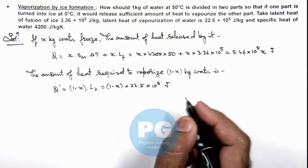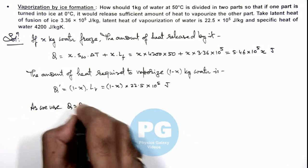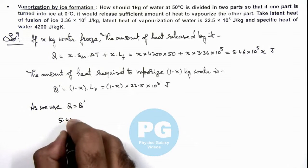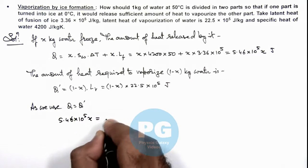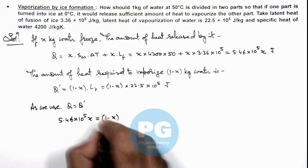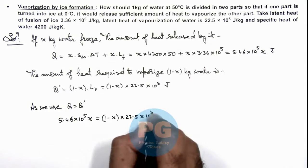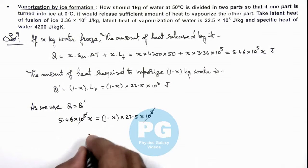So as we use Q equals Q dash, here we can write 5.46 into 10 to power 5 times x equals the heat required. Here 10 to power 5 gets cancelled out and on simplifying the value of x...